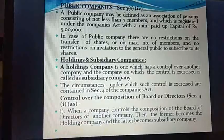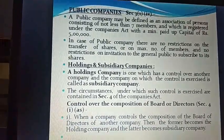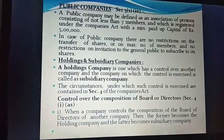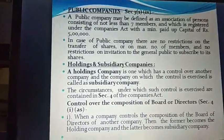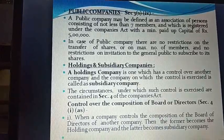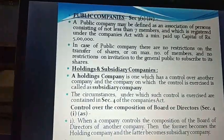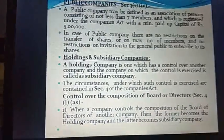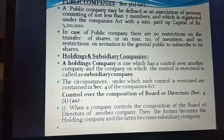We were covering the meaning of holding and subsidiary companies. The first point was that when one company has control over the composition of the board of directors of another company — when one company can appoint or remove the board of directors — they can decide who will become a director. Then the first company is called the holding company and the other is called the subsidiary.